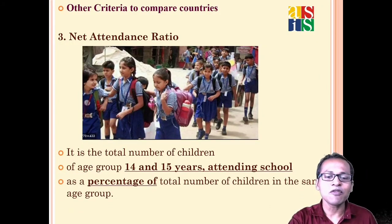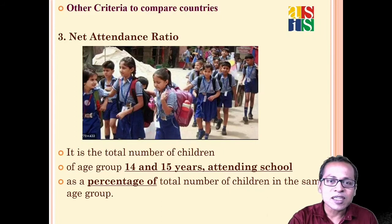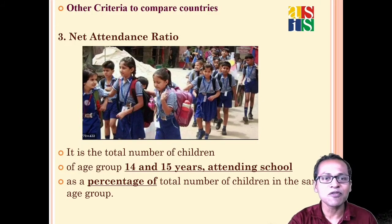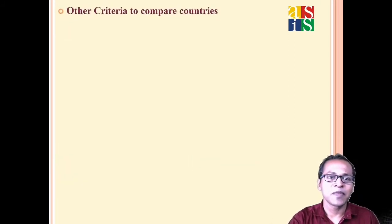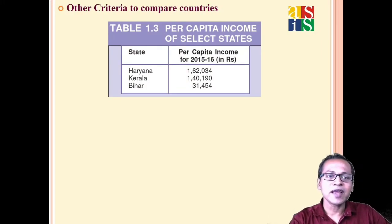If this percentage is higher, it means more students are going to school even for higher secondary education like 9th and 10th — that is good for a nation. Now let us look at three states: Haryana, Kerala, and Bihar.